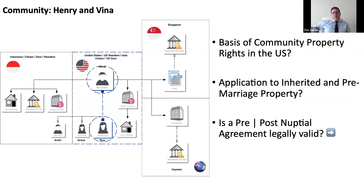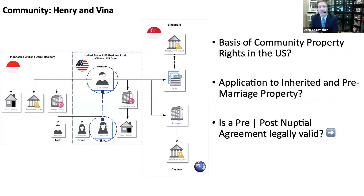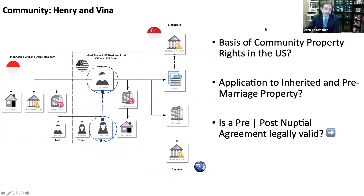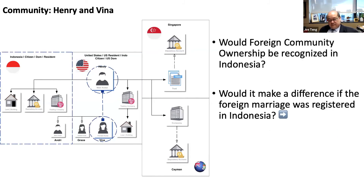Does community property include inherited and pre-marriage property, or is it only property acquired during the marriage as a product of the labors of the relevant parties? I wish we could give a simple answer. There are states like California that can be quite aggressive in broadening that — with a spouse they see as either having been shielded from information or in more of a need perspective — versus a state that's more conservative, like Texas or Florida, where they wouldn't have as expansive a basis. So it really is a state-by-state analysis, both from where they are resident and domiciled and where the property in question is located.